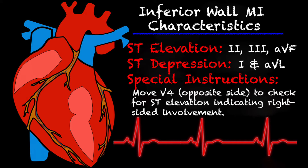If there is no ST depression in lead 1, typically it means that it's an RCA occlusion, but not always. Something special about this specific type of STEMI is to move your V4 over to the right side of the chest and check for ST elevation. Just do the 12-lead again but move that V4 over and look for ST elevation specifically in that lead. If there is ST elevation, that typically indicates right-sided involvement.